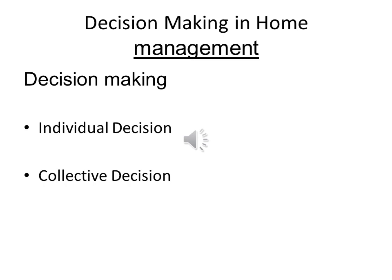Individual decision making is when the problem is very small and you can take a decision by yourself with no need to discuss with others — this is called individual decision making. Collective decision making is when the problem is big and you have to discuss with your parents or others — this is called collective decision making.